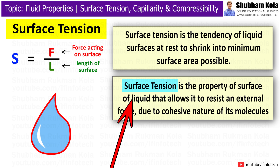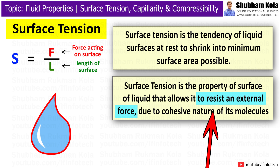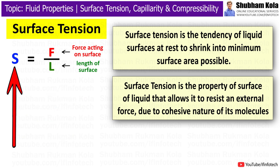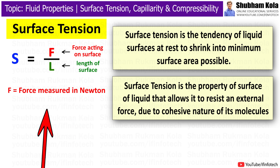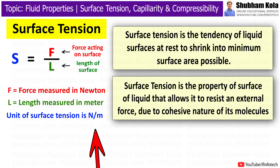Surface tension is the property of the surface of a liquid that allows it to resist an external force due to the cohesive nature of its molecules. Surface tension depends upon the forces of attraction between particles within the given liquid and also upon the gas, solid, or liquid in contact with it. Mathematically, surface tension is defined as the ratio of force acting on a surface to the length of that surface, where F is force in Newtons and L is length in meters. Hence, the unit of surface tension is Newton per meter.